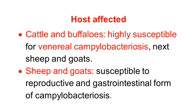Regarding hosts affected by campylobacteriosis: cattle and buffaloes are highly susceptible to this genital or venereal campylobacteriosis. The next order of susceptibility is sheep and goat. Sheep and goat are susceptible to both forms of campylobacteriosis — the genital form and the gastrointestinal form. The gastrointestinal form of campylobacteriosis will be studied in a separate video.